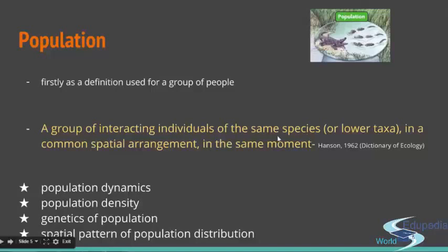Depending on what aspect of population ecology works on, you have different sub-branches of ecology. Population as an entity has its progressions, development, and declines — its processes. Depending on which of those processes you are looking at as an ecologist, you will get information on population dynamics, density, genetics of population, distribution, and so on. There are many levels through which you can examine population as an organization of organisms.